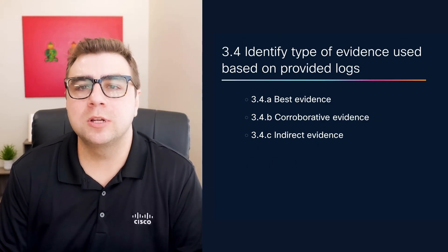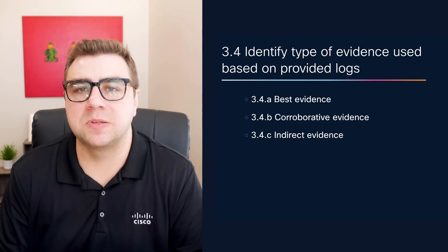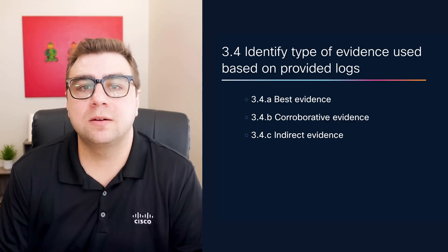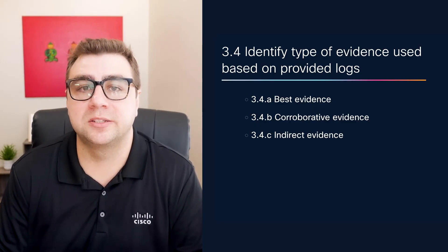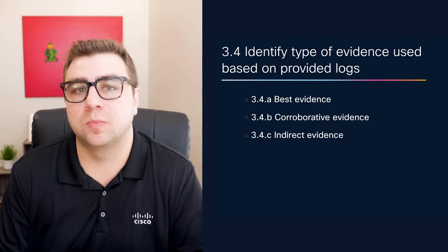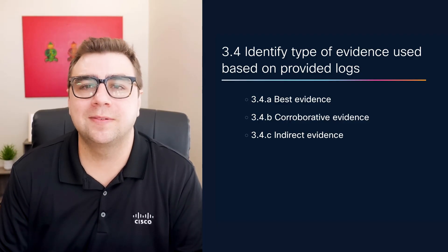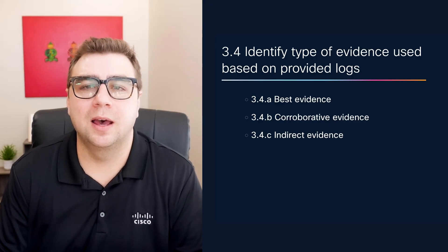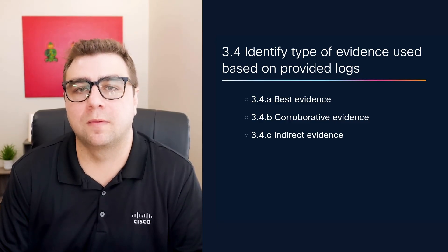Speaking of evidence, you'll want to be able to identify different types of evidence from logs or investigation artifacts. The exam blueprint calls out best evidence, corroborative evidence, and indirect evidence. Best evidence is direct and trustworthy, like a log entry showing a successful login from a known attacker's IP. Corroborative evidence supports a conclusion, like two different logs showing the same behavior. Indirect evidence might suggest something happened but doesn't prove it on its own. Understanding how these types of evidence play into incident response is a huge part of real-world analysis.